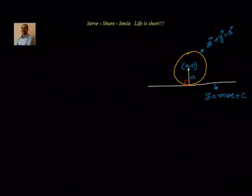Hello friends, welcome back. Hearty welcome to you. In this session we will see what is the condition that needs to be satisfied such that a line y equal to mx plus c is a tangent to the circle x square plus y square equal to a square. So what is the condition that needs to be satisfied so that a line can be a tangent to a circle?